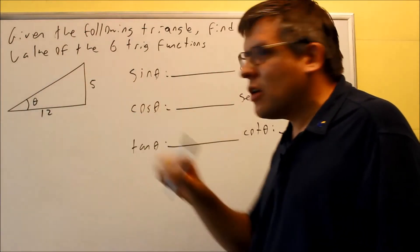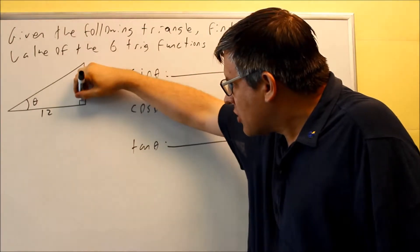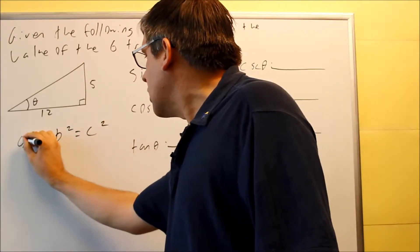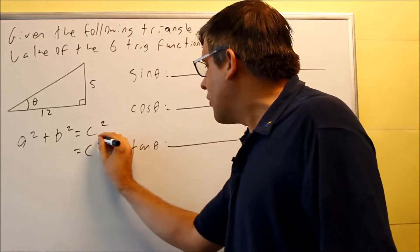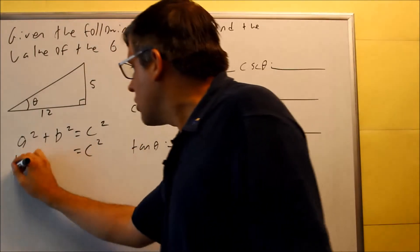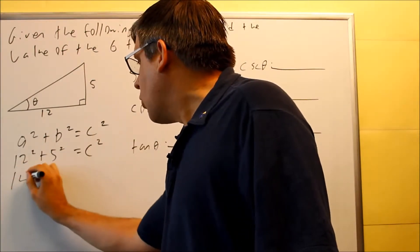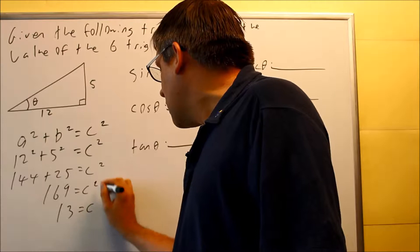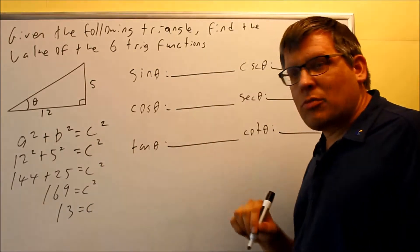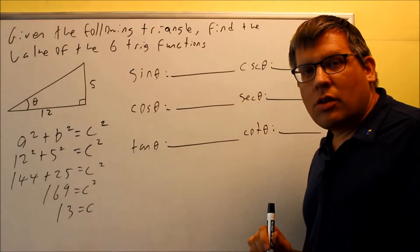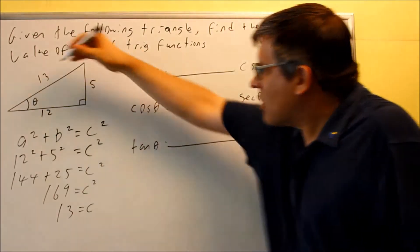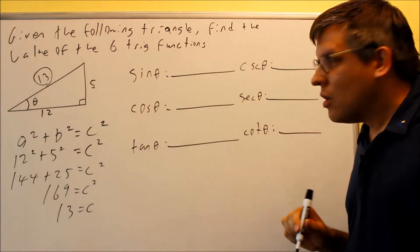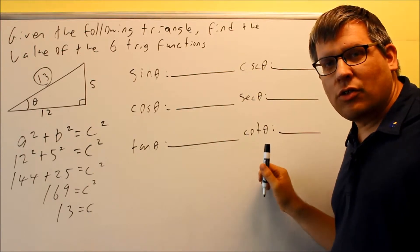The missing side is going to be C, because it's opposite the right angle — that's our hypotenuse. Using A squared plus B squared equals C squared, C is what we're solving for. So: 12 squared plus 5 squared gives us 144 plus 25, which equals 169. Taking the square root of both sides gives us C equals 13. We take the positive root only since we're dealing with a triangle. So 13 is our missing side.